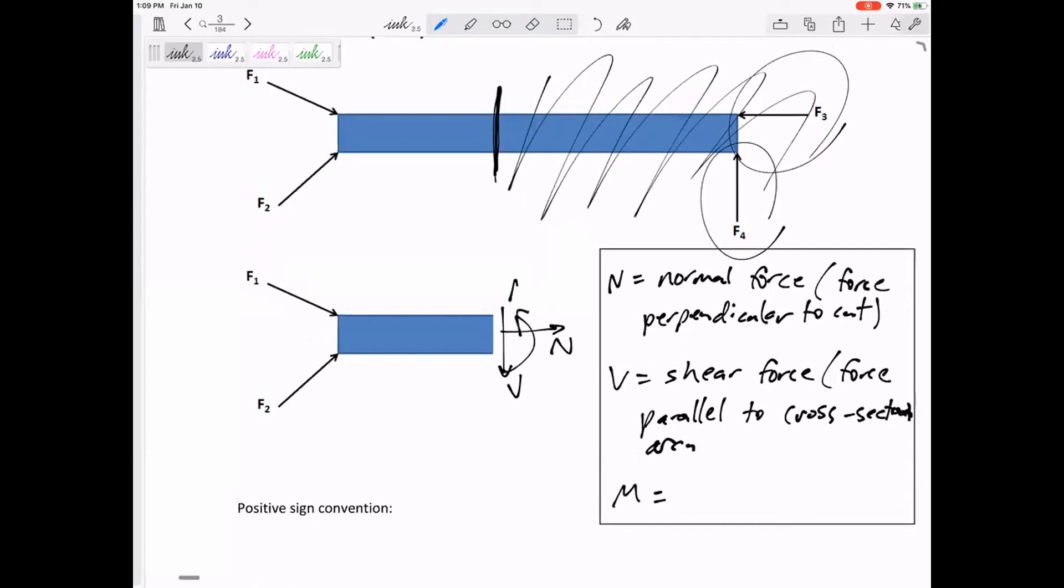And then there's M, the internal moment. We're going to call it the bending moment. It would bend it like a smiley face or a frown, and a smiley face is positive.